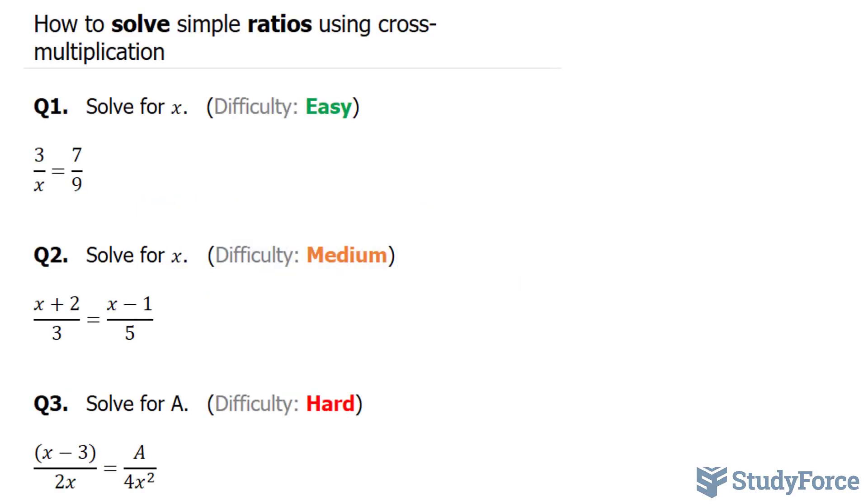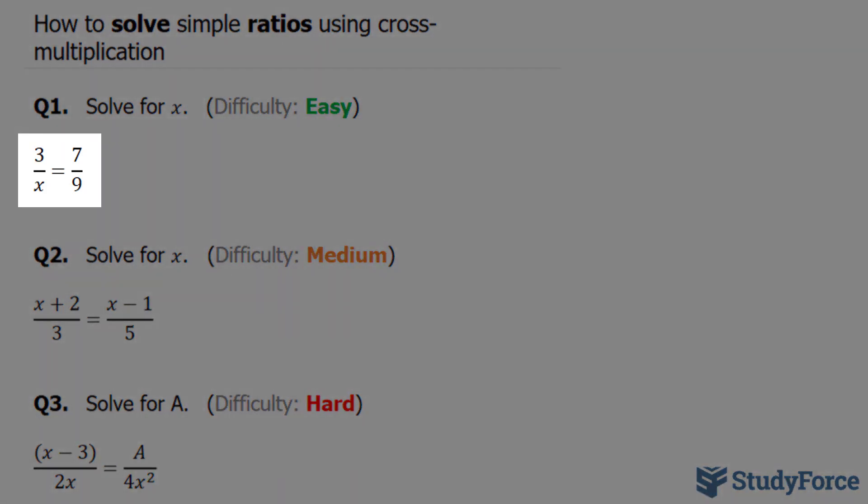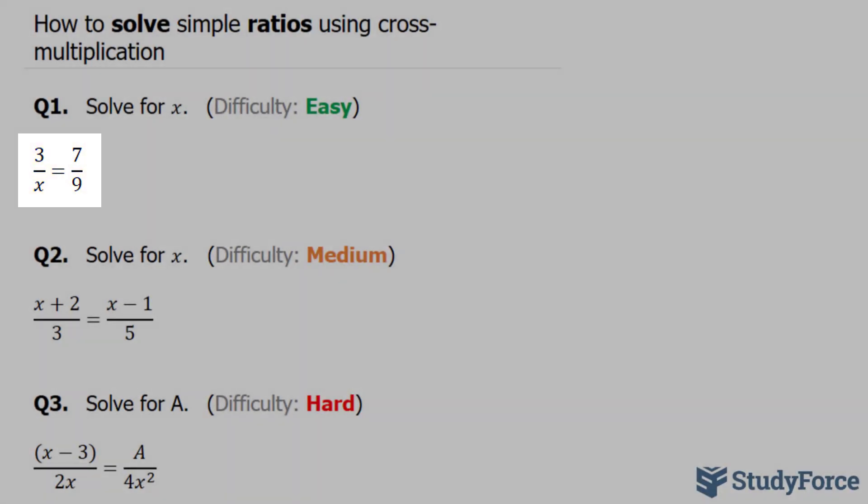In this video, I'll show you how to solve simple ratios using cross multiplication. Keep in mind that this technique works best when you have a quotient on the left side and one quotient on the right side. So once again, if you have one fraction on the left side and one fraction on the right side, this technique works perfect.